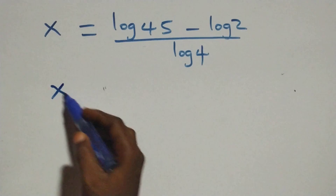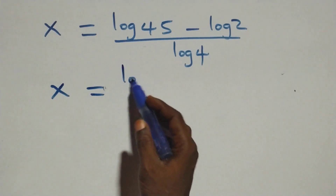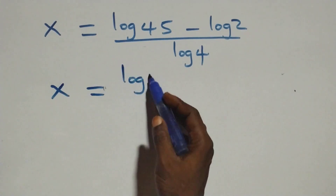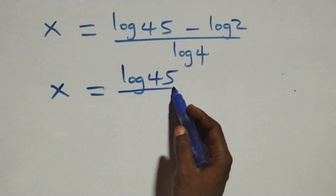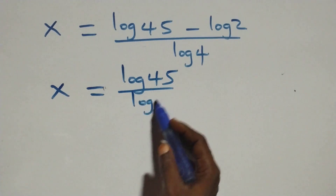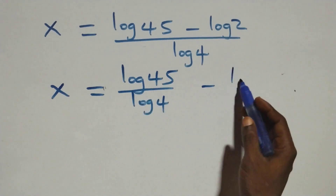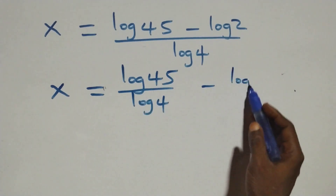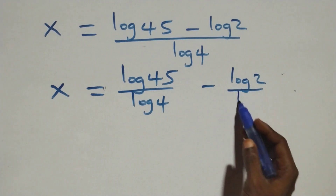We separate this into two fractions: x equals log 45 over log 4, then minus log 2 over log 4.